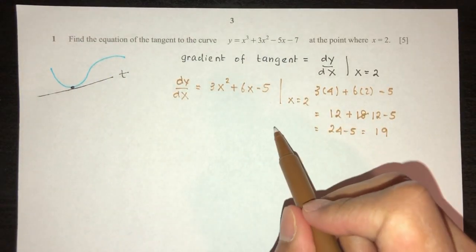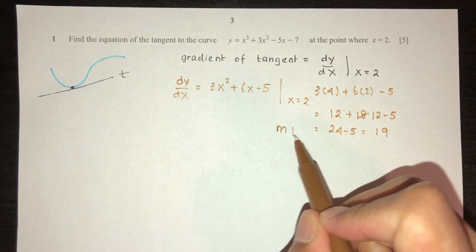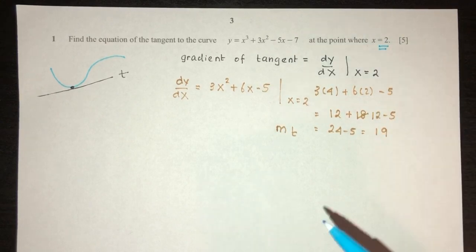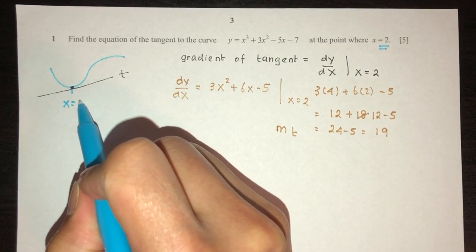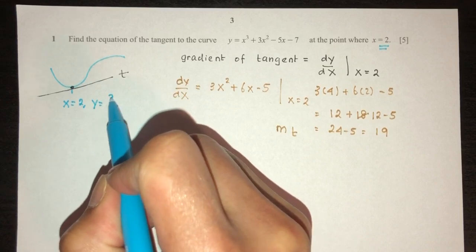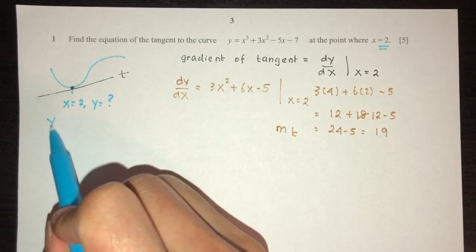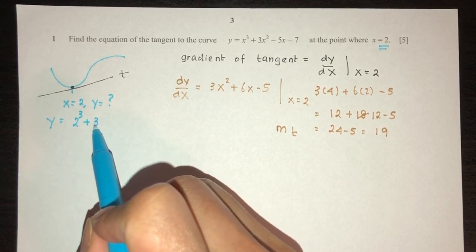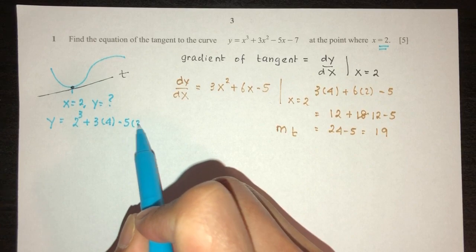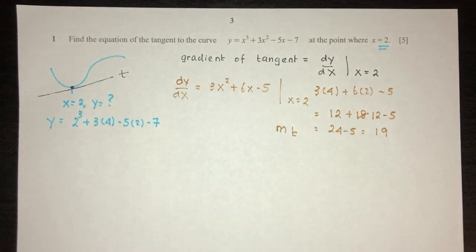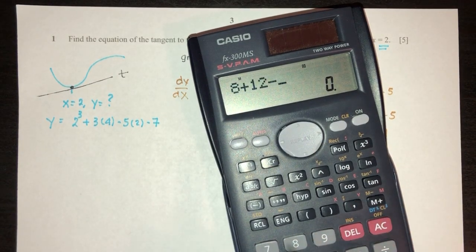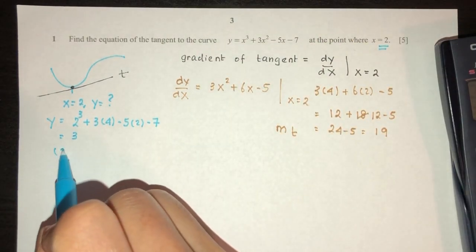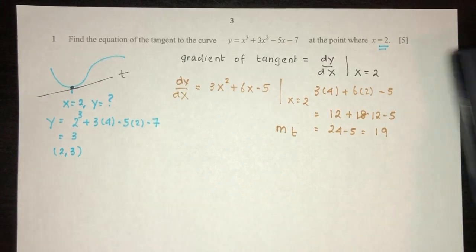The gradient of the tangent is equal to 19. Now we need a passing point — at x equal to 2, what is the value of y? Replace back in your equation: y will be 2³ + 3 times 4 minus 5 times 2 minus 7, which is 8 + 12 − 10 − 7 = 3. So the point is (2, 3), that is your passing point.